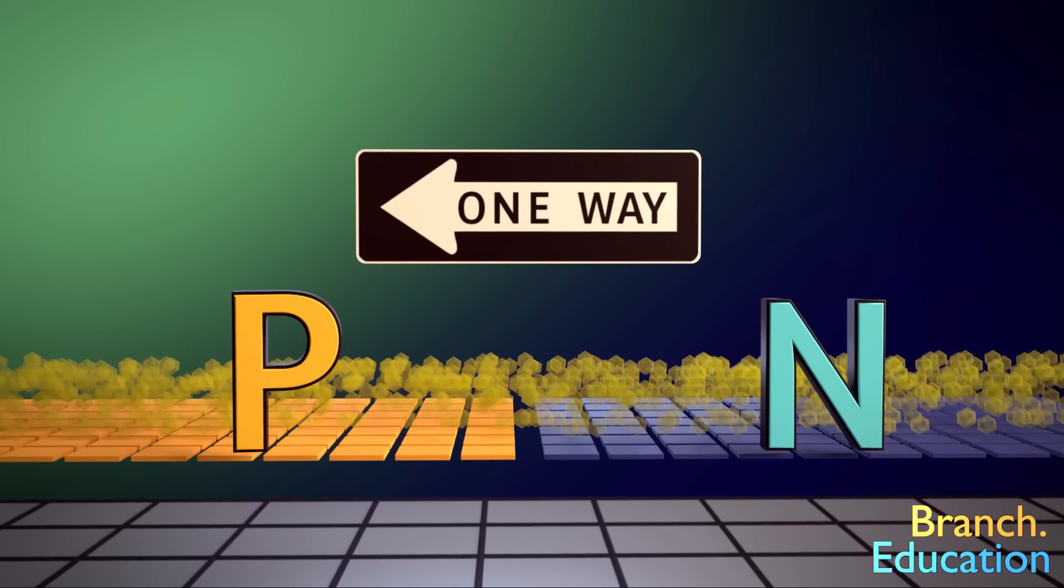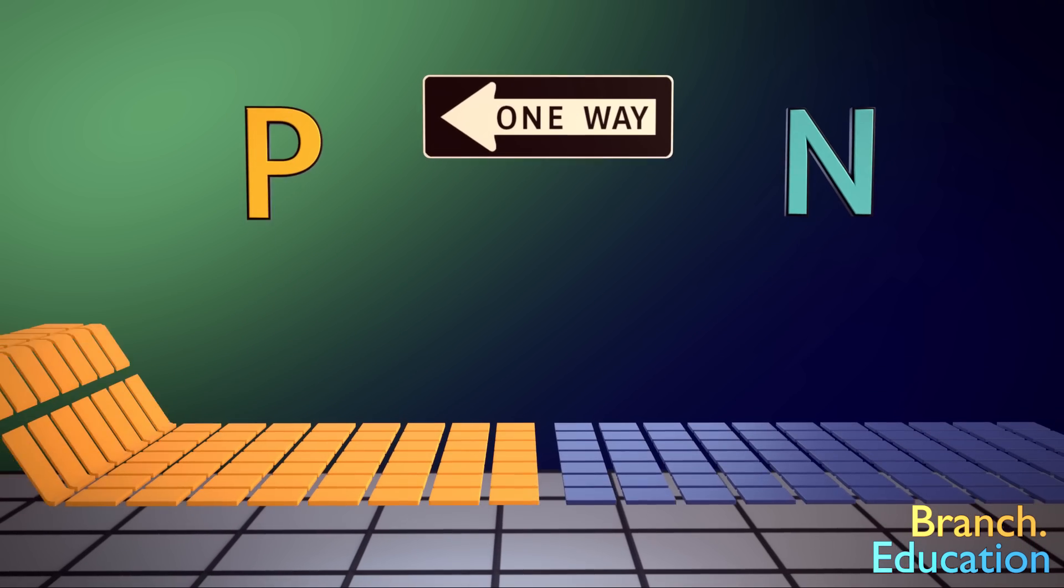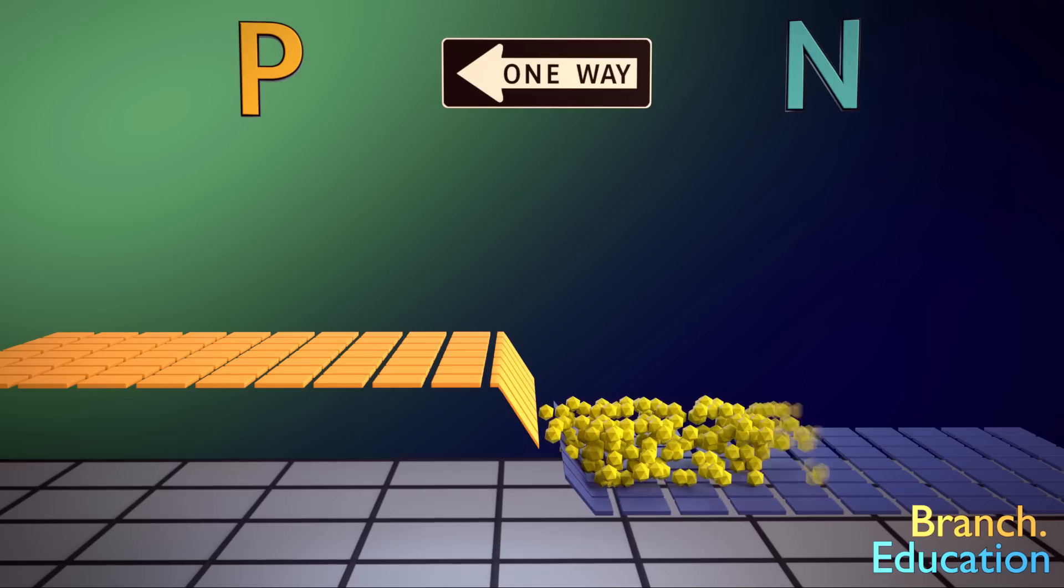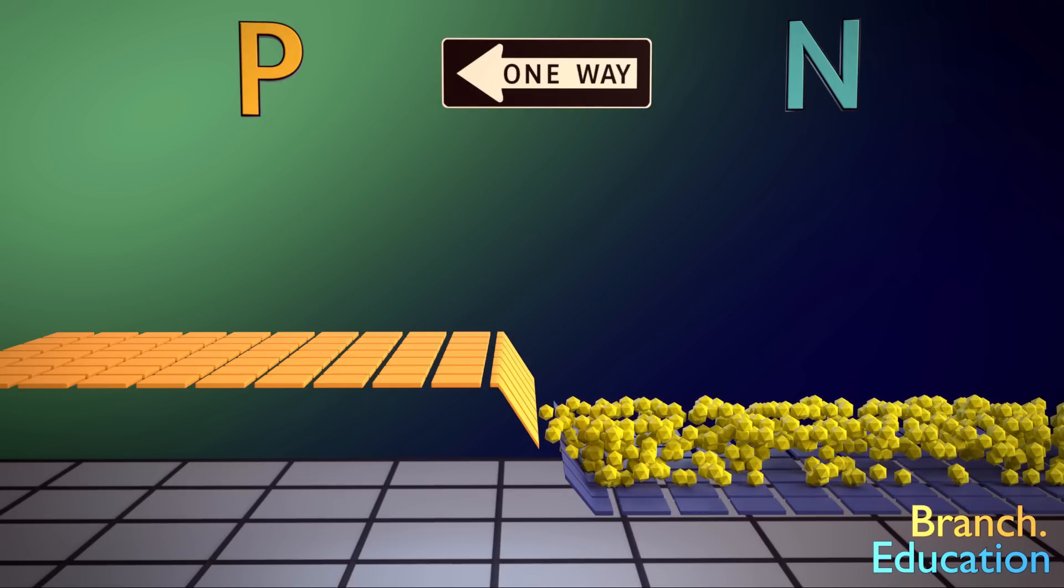Additionally, this road is not flat, but rather P is uphill from N, and thus the electrons don't move from N to P, at least without extra energy, you know, because it's uphill.